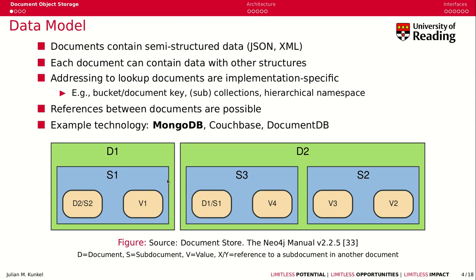Here we see an example where we have two documents, document 1 and document 2, and these documents can contain sub-documents — sub-document 1, sub-document 3, and sub-document 2. A document can also contain values, value 1 for instance.